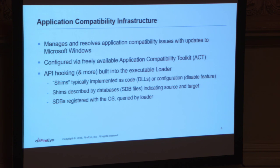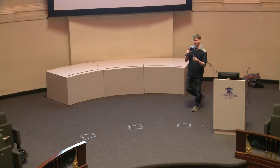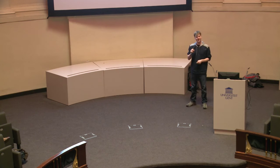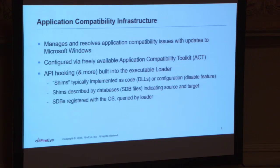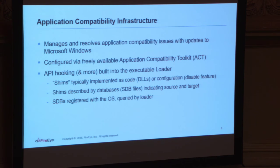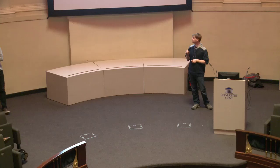Microsoft uses this all the time. When you get an update, sometimes you'll see Microsoft Office getting updated — two or three times a week sometimes — when they find different vulnerabilities that might cause Office or Outlook to break. So they implement these little fixes by hooking into the actual Windows API. These things are called shims, and they're built into big databases on the file system — basically binary XML.